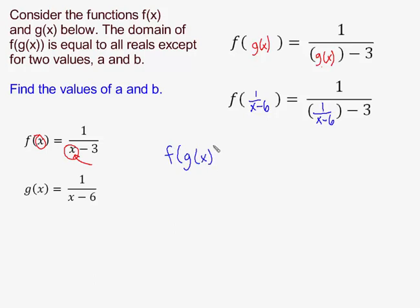I found the composite function f of g of x to be 1 over, 1 over the quantity x minus 6, then subtract 3. Finding the composite function is step 1. The ultimate goal, however, is to find the domain of the composite function f of g of x.